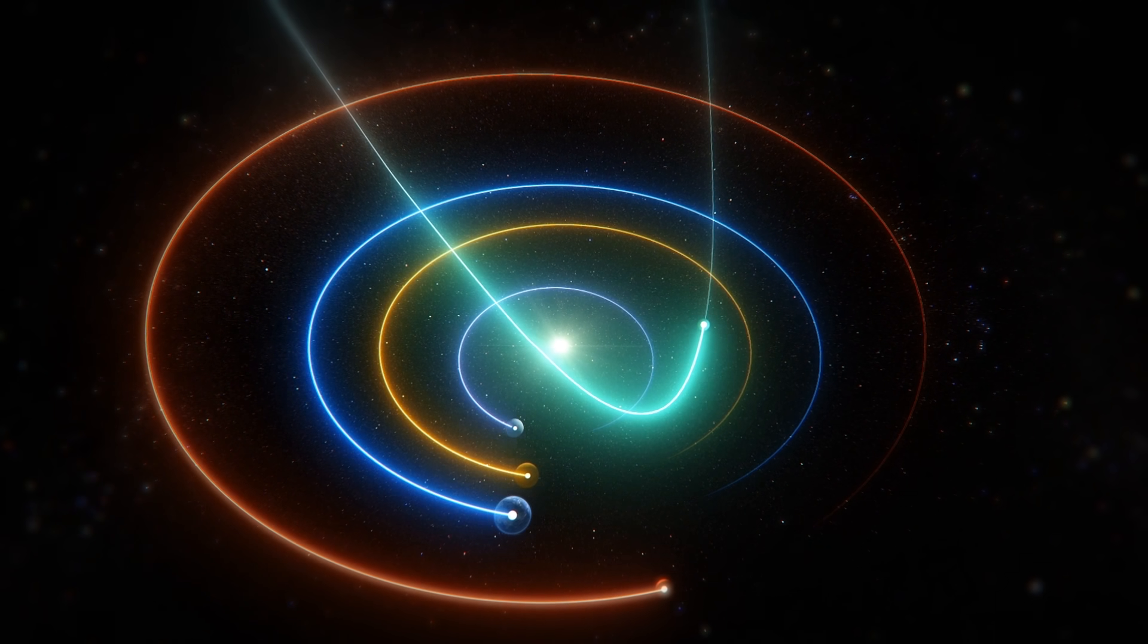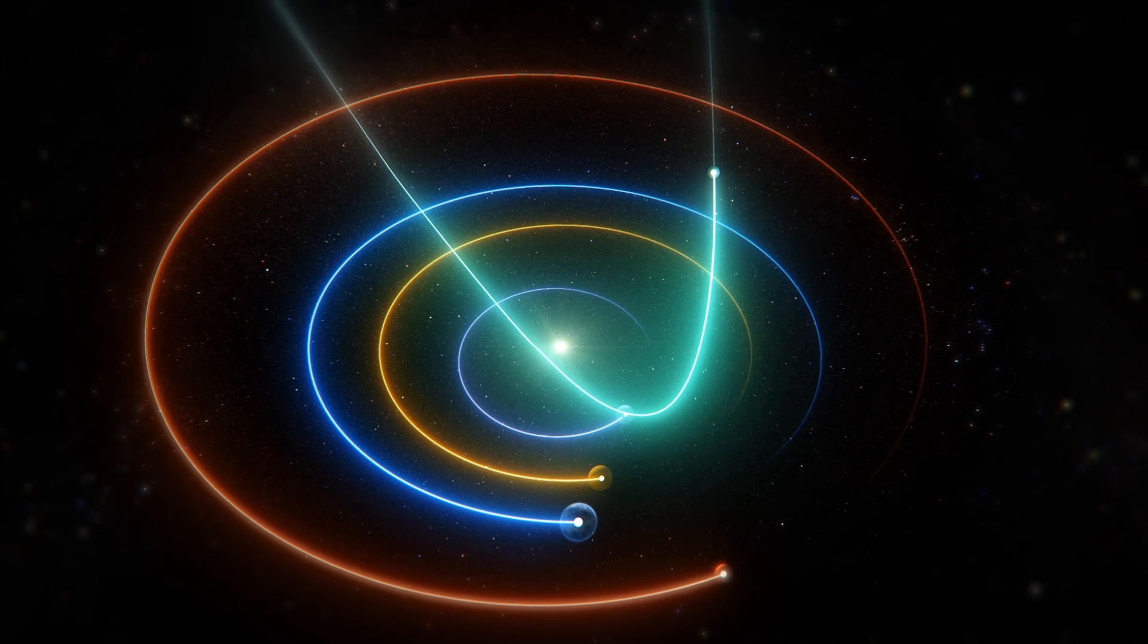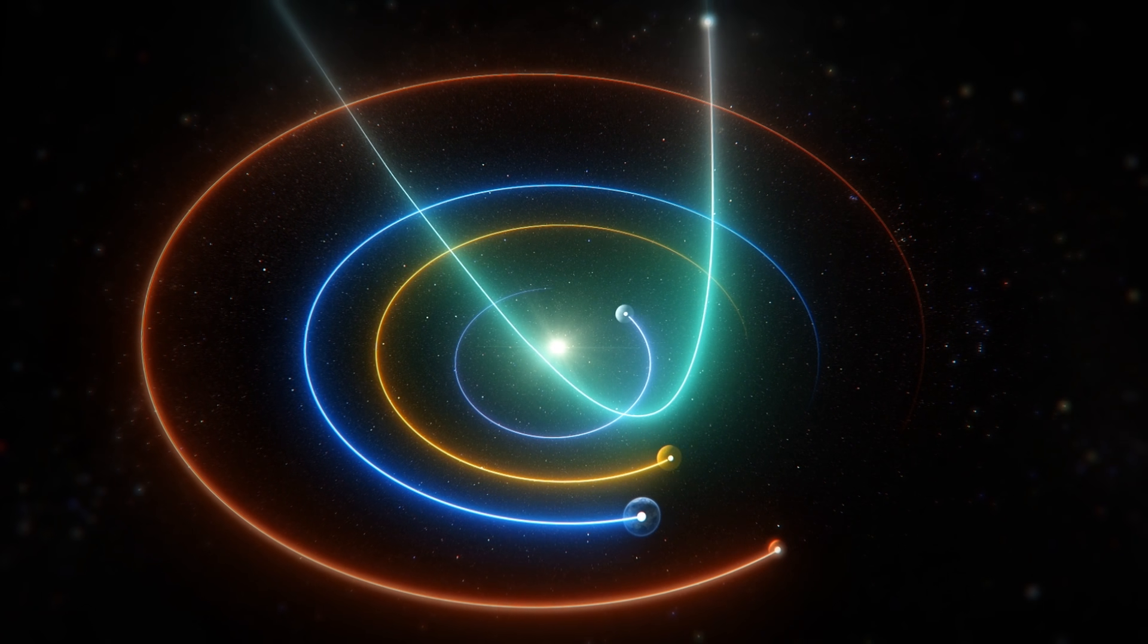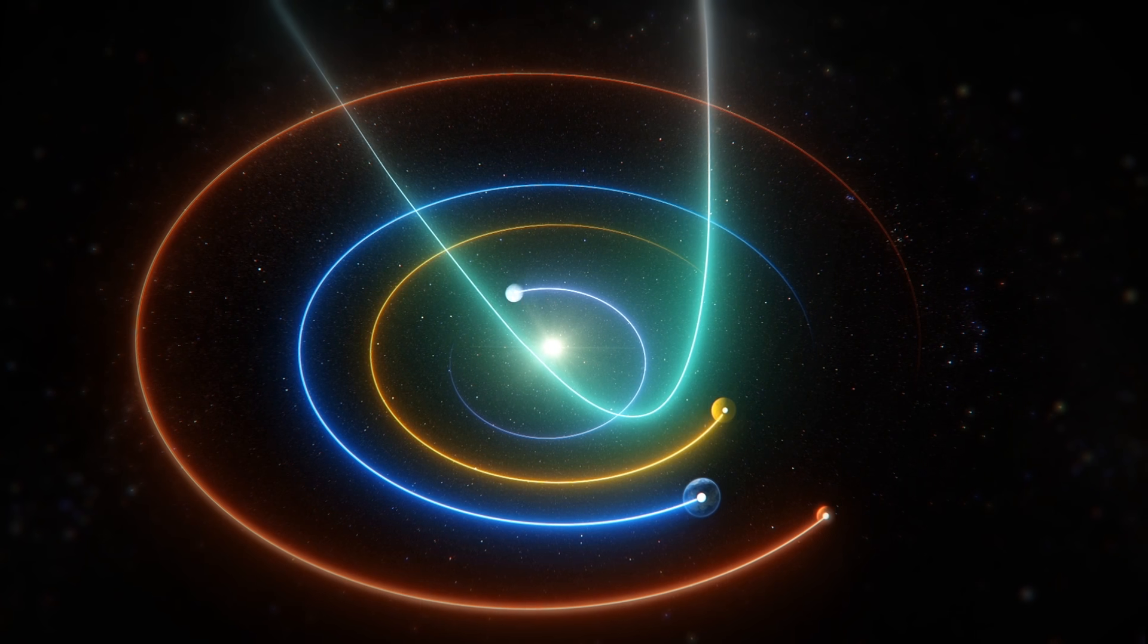Should it withstand the Sun's heat, the comet will loop inside Mercury's orbit and become visible to the naked eye on Earth in April.